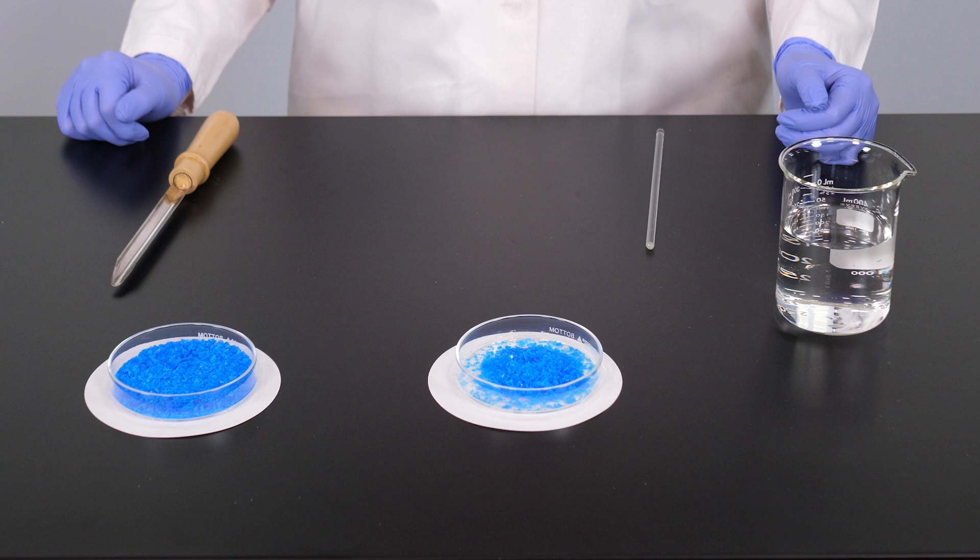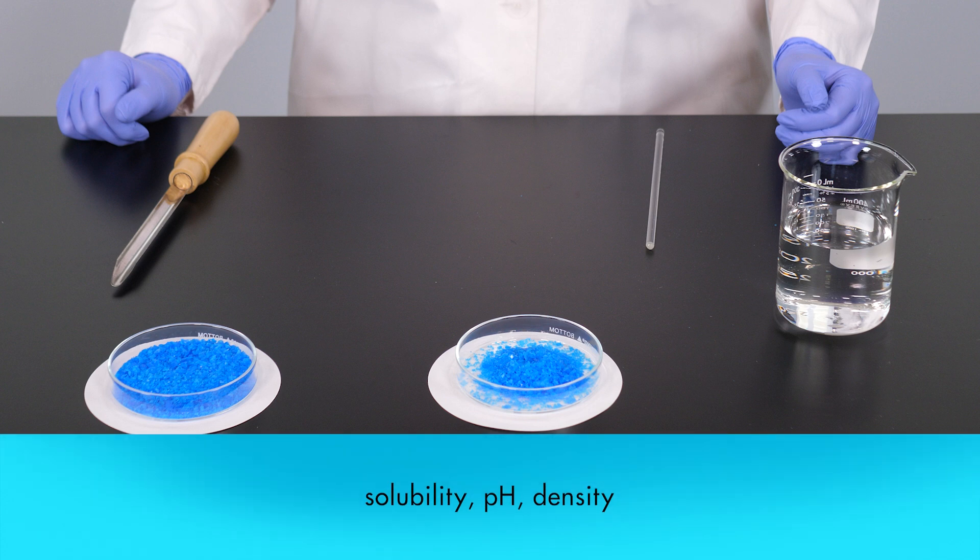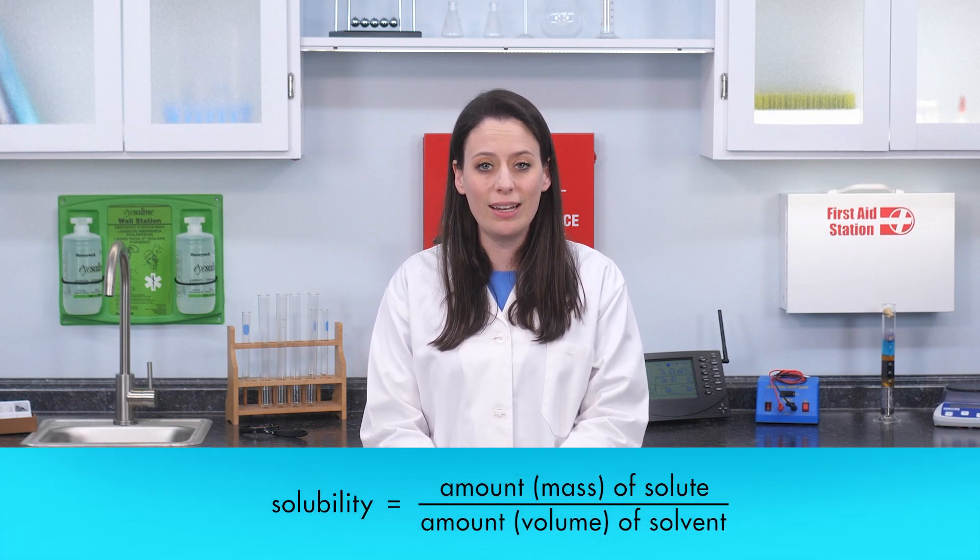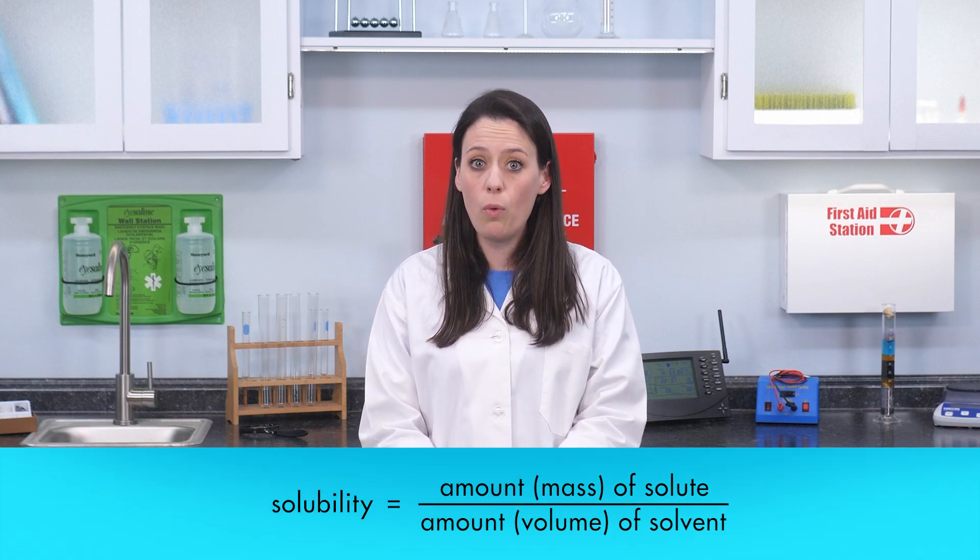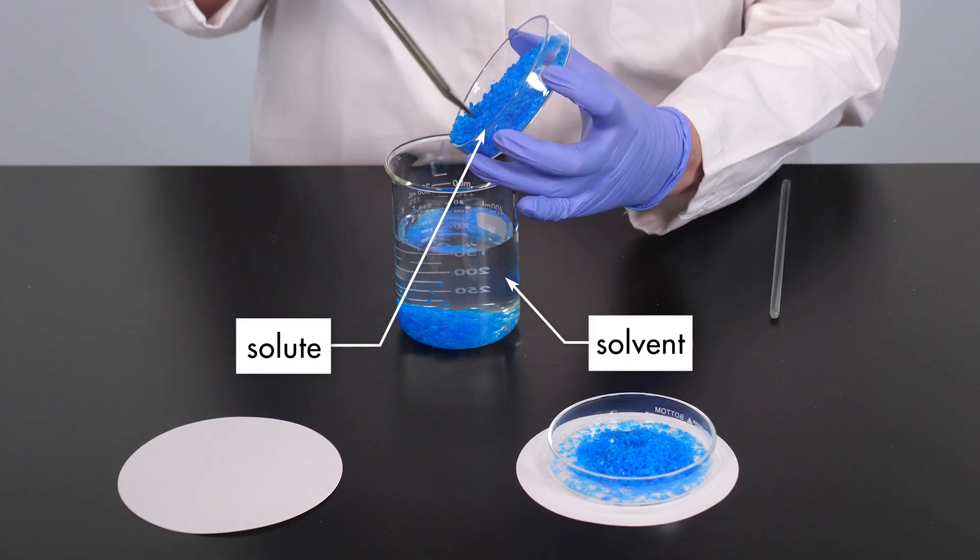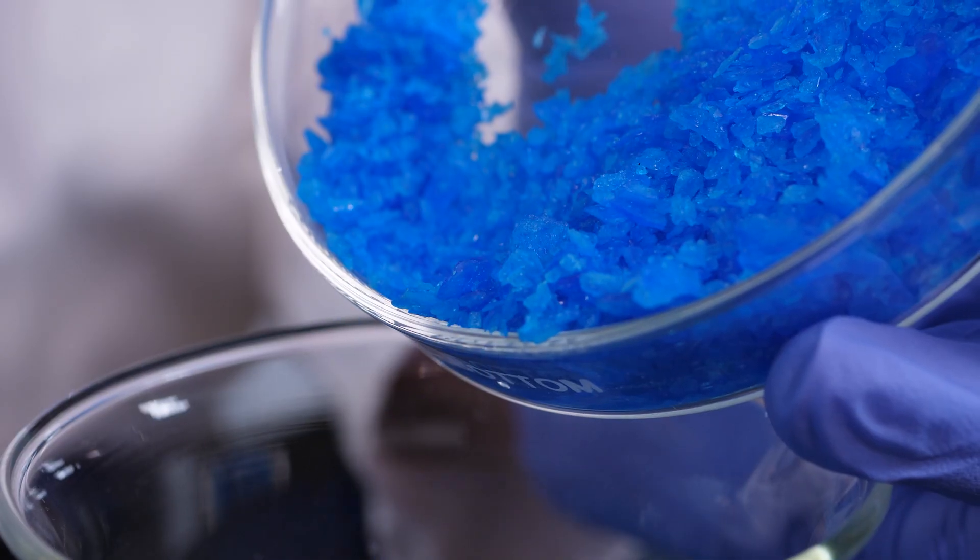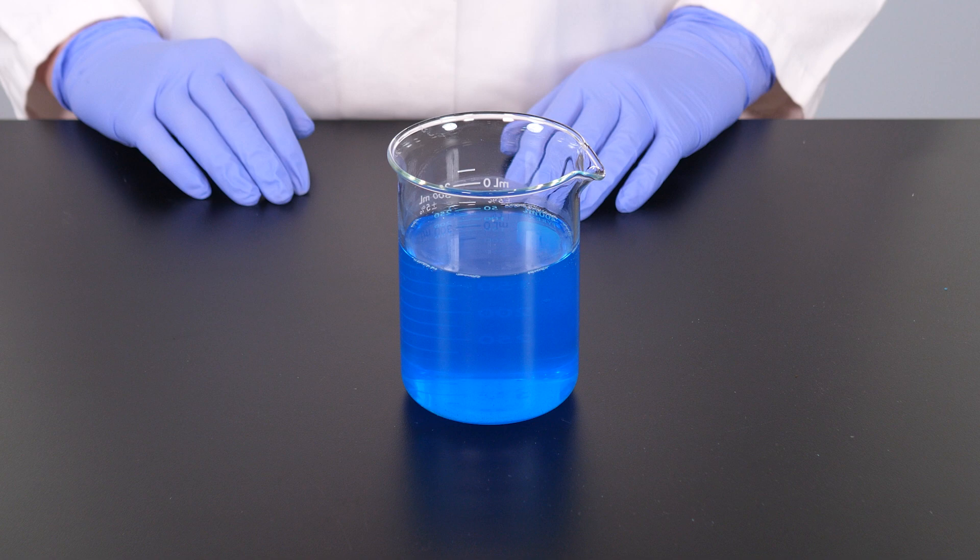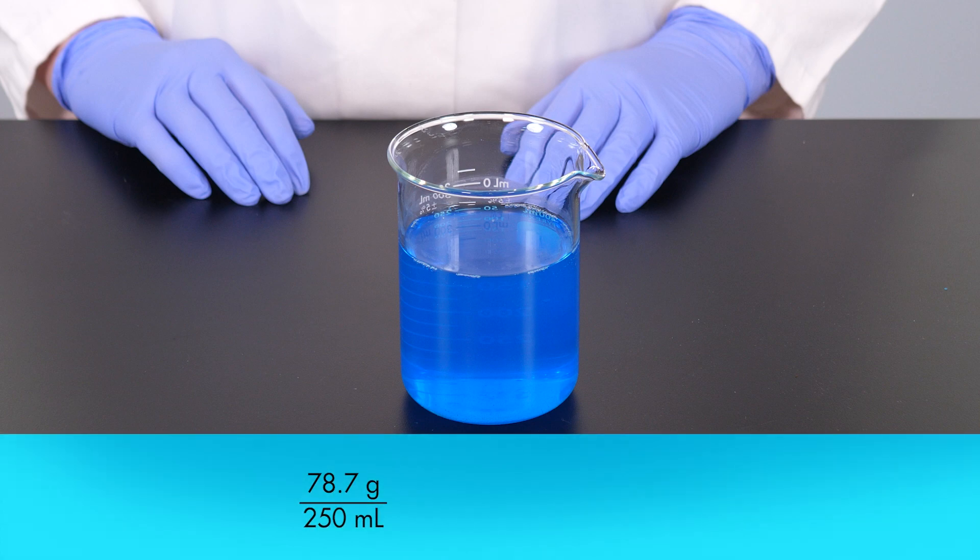Now we move on to experimentation, which involves a set of tests to help us arrive at a conclusion. During our experimentation, we test the substance for solubility, pH, and density. To determine the solubility of the substance, we find the maximum amount of the substance, the solute, that will dissolve in an amount of water, the solvent. Measured amounts of the solute are added to the solvent, and the mixture is stirred. We keep adding solute and stirring until no more solute will dissolve.